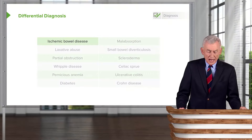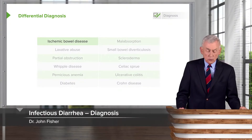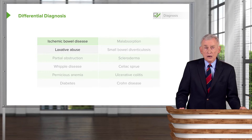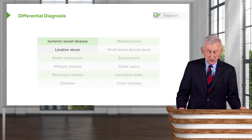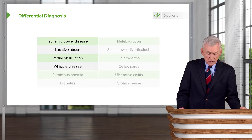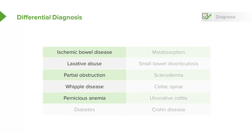What's in the differential diagnosis of infectious causes of diarrhea? One of them is ischemic bowel disease, found among the elderly. Some patients are addicted to laxatives. You can have diarrhea with partial bowel obstruction, with Whipple disease. It's pretty rare, but you can have it with pernicious anemia. There is such a thing among diabetics as diabetic visceroenteropathy.